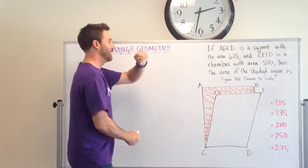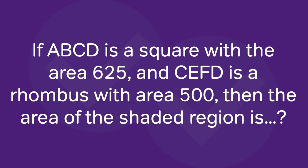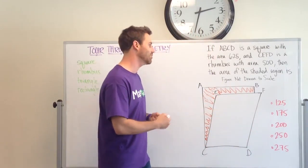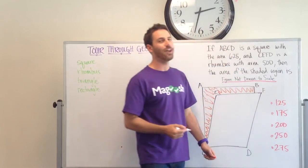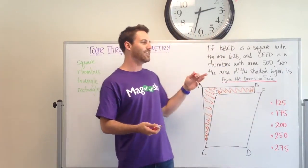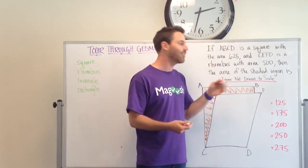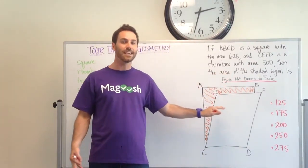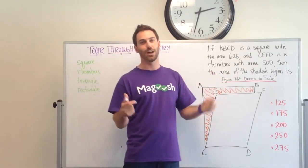First the question. It says if ABCD is a square with the area of 625, and CEFD is a rhombus with an area of 500, then the area of the shaded region is... And we have our options here. Important things to pay attention to: figure not drawn to scale. That means you really don't want to trust what you see. You want to trust the numbers and your knowledge of geometry.